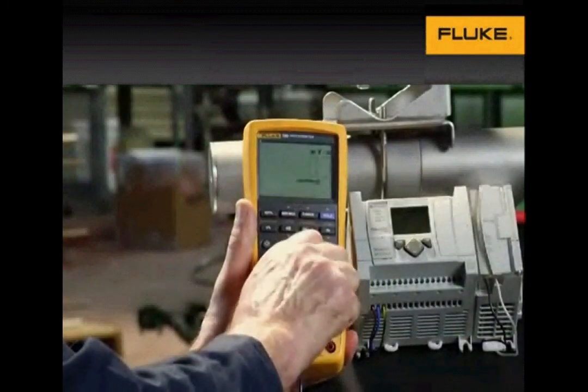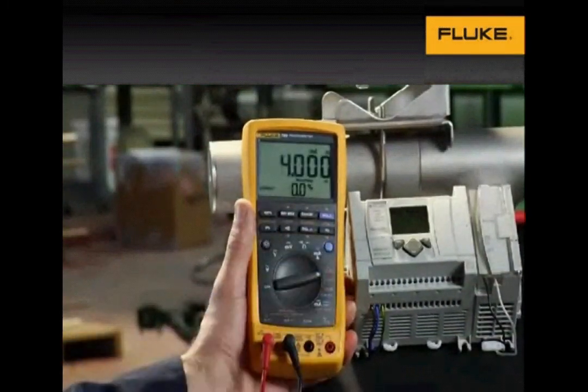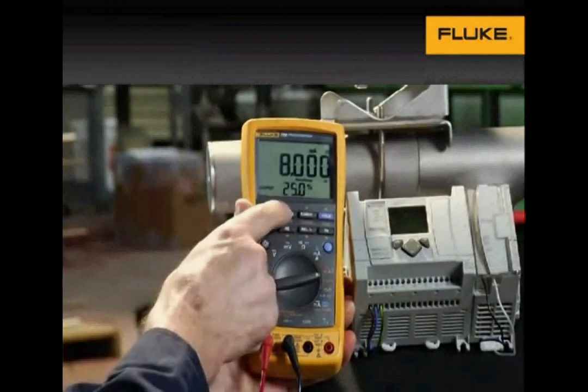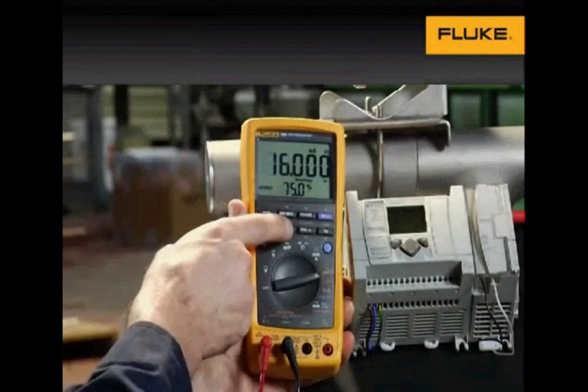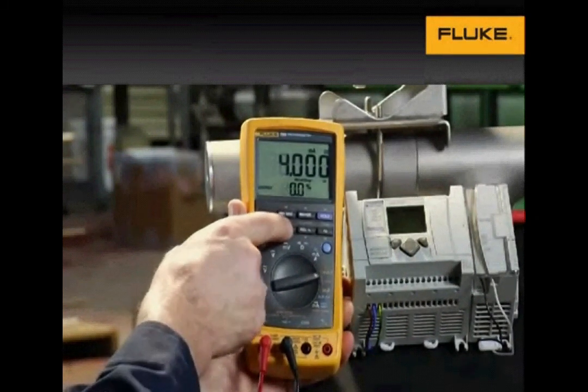In the milliamp function, the built-in loop calibrator sources a 4 to 20 milliamp signal to test devices with a 4 to 20 milliamp input, such as a PLC I/O or analog milliamp indicators.